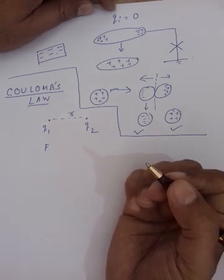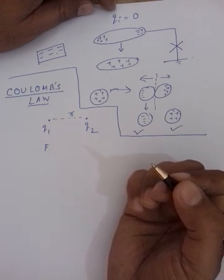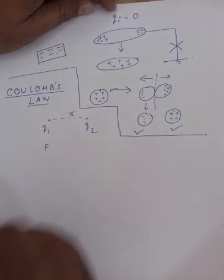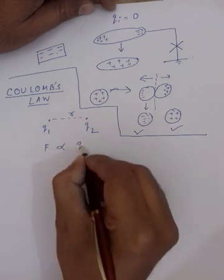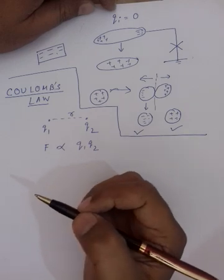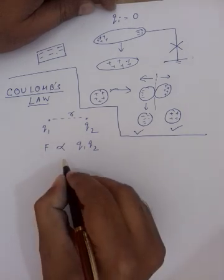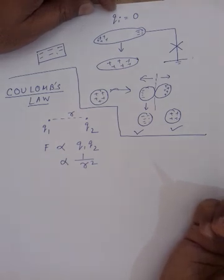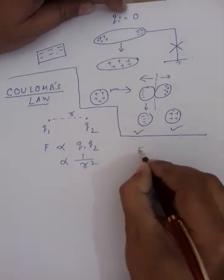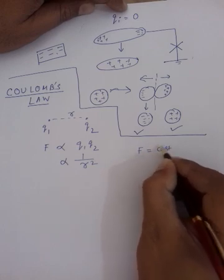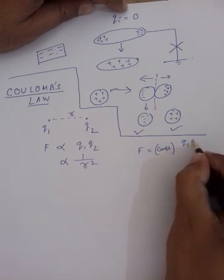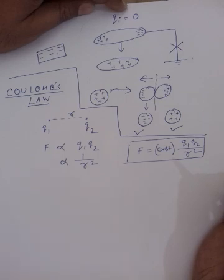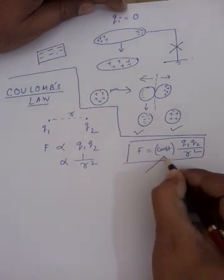If similar charges they will repel; if opposite charges they will attract. The value of the force is directly proportional to the product of their charges — this is the statement of Coulomb's Law, obtained by observation. The force is also inversely proportional to the square of the distance between the two charges. To make them equal we need a constant, so the force is given by: F = (constant) × q1·q2 / r².